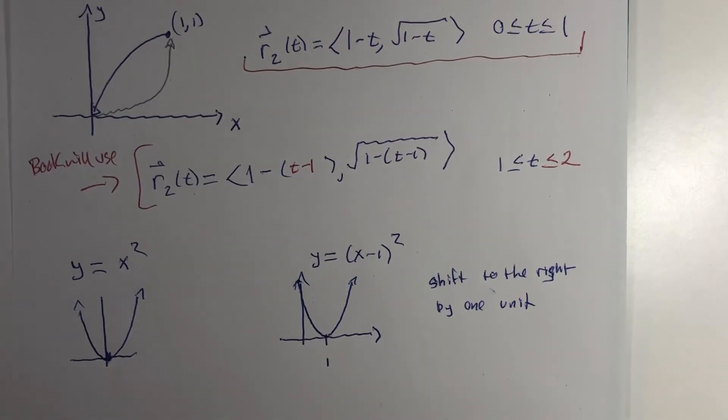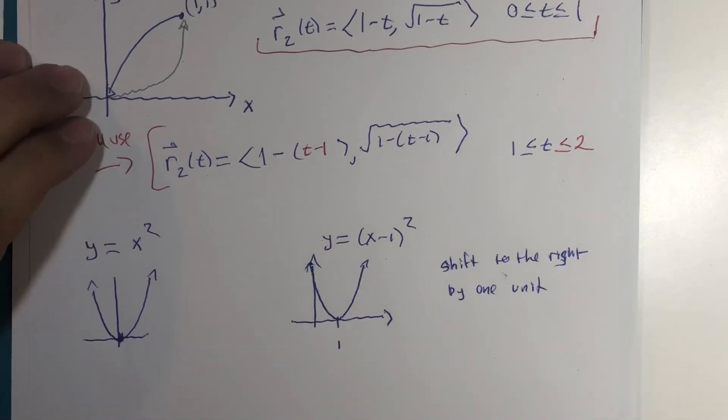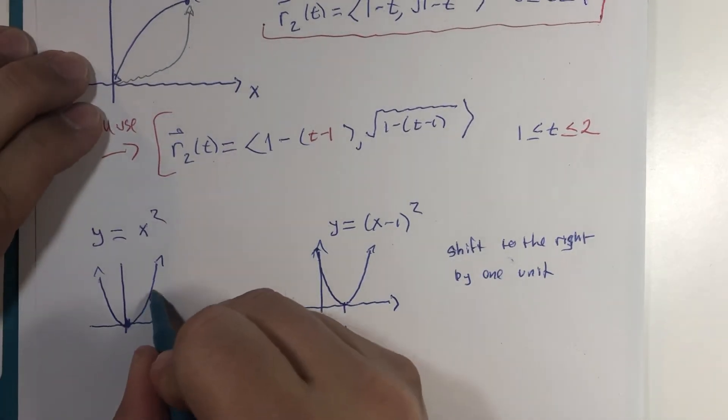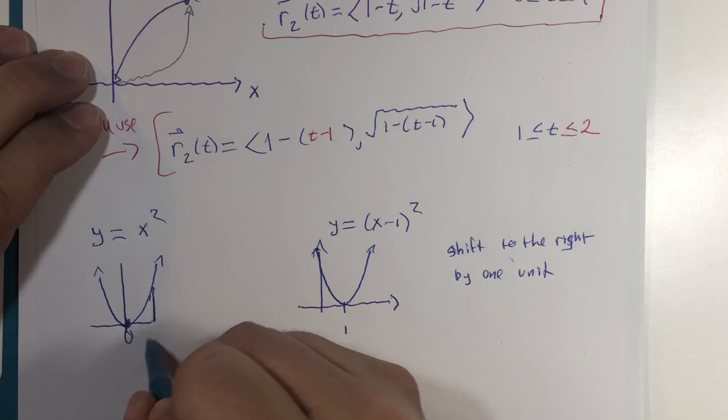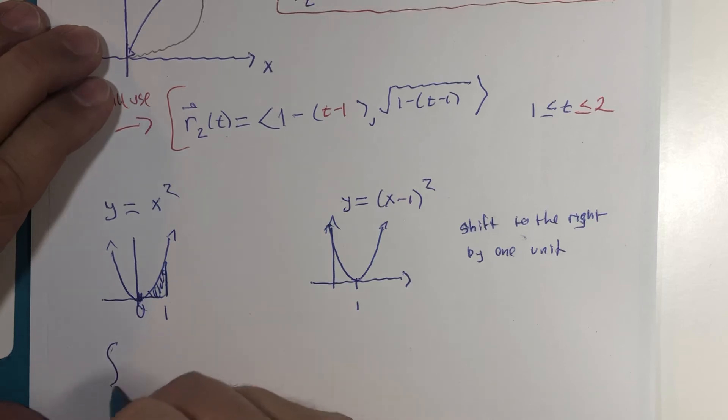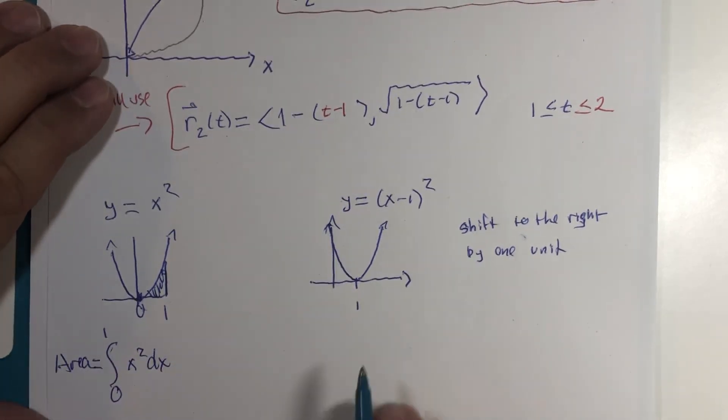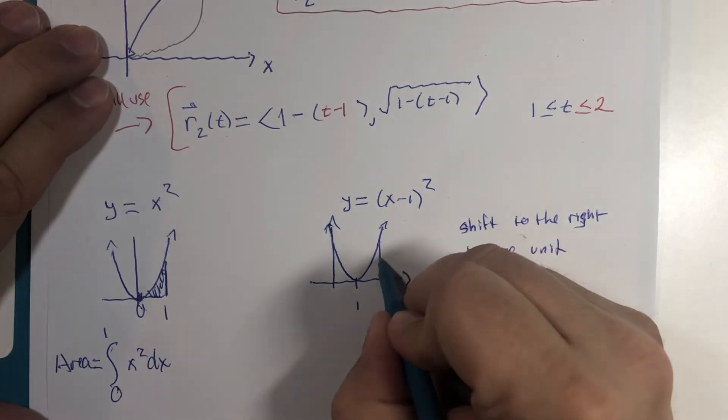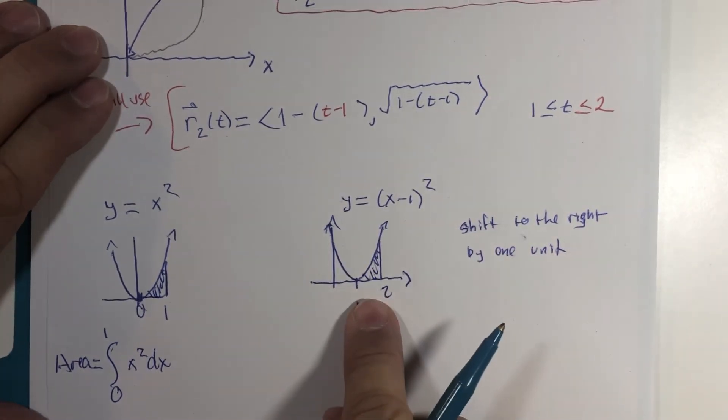Now for the calc one students, if I were to go from zero to one and calculate this area, I would say it's the definite integral from zero to one of x² with respect to x. That would be the area.